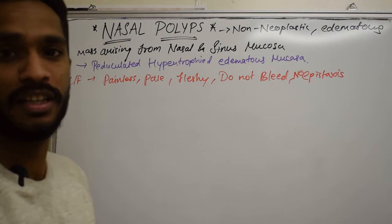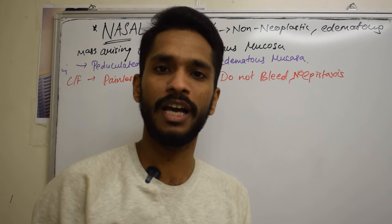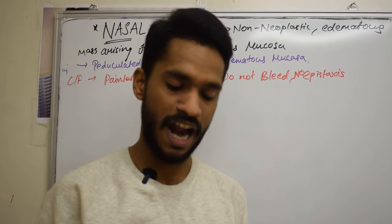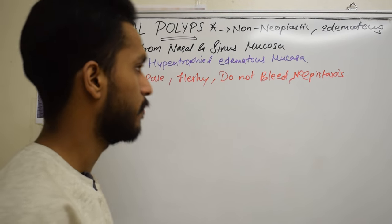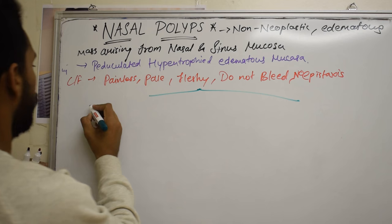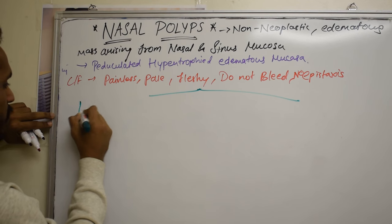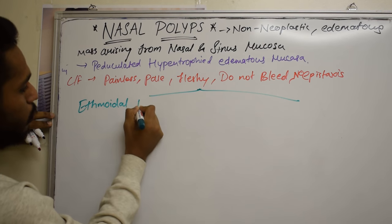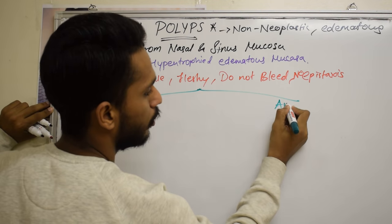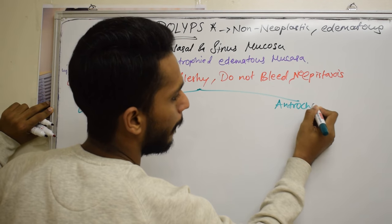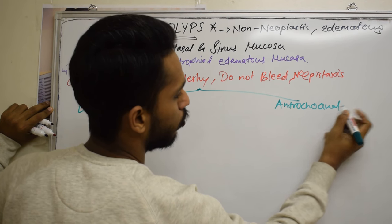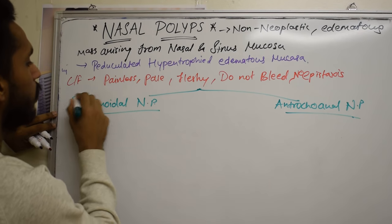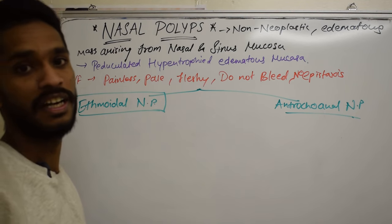Depending upon the site from where they originate, we have two types of nasal polyps: one is ethmoidal nasal polyps and the other is anterochoanal nasal polyps. The anterochoanal nasal polyp arises from the maxillary antrum, whereas the ethmoidal nasal polyp arises from the ethmoidal air cells.